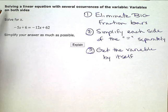Solving a linear equation with several occurrences of the variable, variables on both sides. So I have an equation here that I'm going to solve for x.